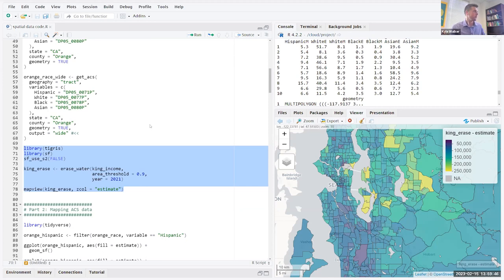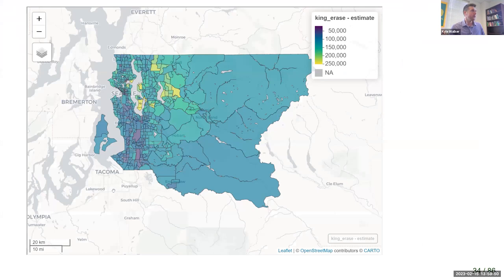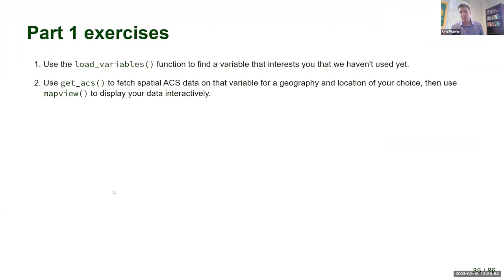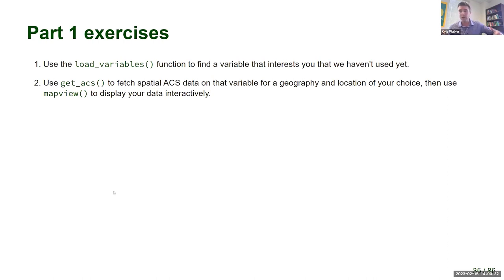That closes out our first hour. We're going to take a 10-minute break and return at 2:10 Eastern time to delve into making maps. I'll look at questions over the break. While you take your break, try using the load_variables function in tidycensus to find a variable that interests you — maybe look in the data profile with '2021, acs5/profile.' Then try fetching spatial ACS data for a geography and location of your choice and mapping it with plot or mapview.